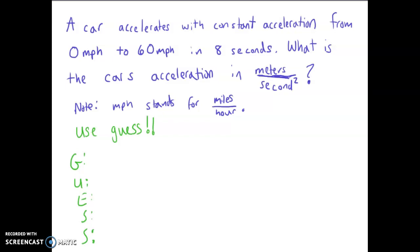Today's daily practice problem has to do with constant acceleration and a little bit of unit conversion. A car accelerates with constant acceleration from 0 to 60 miles per hour in 8 seconds. What is the car's acceleration in meters per second squared? Note: MPH stands for miles divided by hour, or miles per hour. Use the GUESS method here.